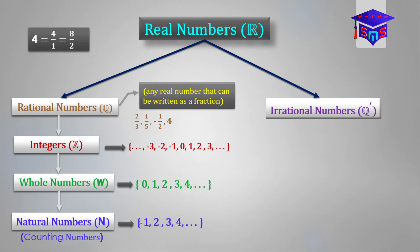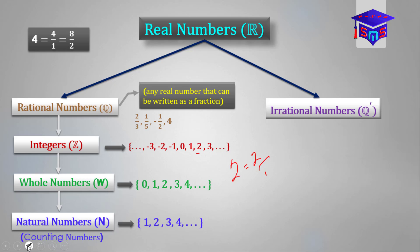All the numbers we talked about — the natural numbers, the whole numbers, and the integers — they are all rational numbers because they can be written in the form A over B or expressed as fractions. For example, 2 can be written as 2 over 1, so it's also a rational number. We can say that all integers are rational numbers, and it is true.